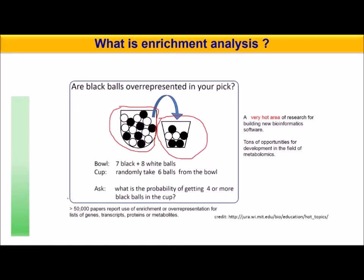There are already 50,000 or more papers reporting use of enrichment or over-representation analysis for lists of genes, transcripts, proteins, and metabolites. If you want to know more about the mathematical concepts of over-representation analysis and how probabilities are calculated, you can go to the referenced website — they have excellent material, and the picture was adopted from that website as well.